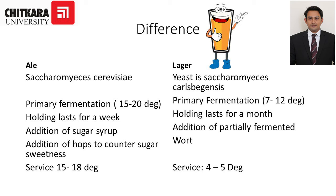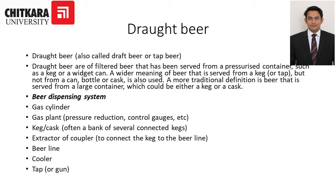One important category of beer apart from ales and lagers is draught beer, which is served fresh. Draught beer is a filtered beer that has been served from a pressurized container such as a keg or a widget can. A wider meaning refers to beer served from a keg but not from a can. A more traditional definition is beer served from a large container, which could be either a keg or a cask.